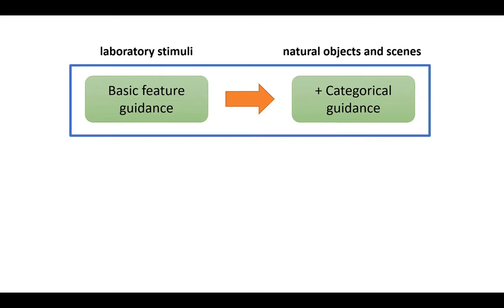Our solution is to extract pre-attentive shape guidance features from an intermediate layer of a CNN model, and then learn the association between them and categorical concepts, so that they can be used to guide visual search for categories.